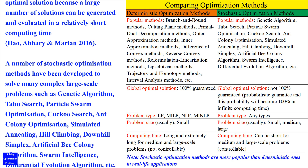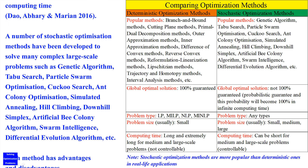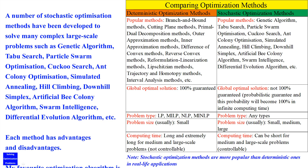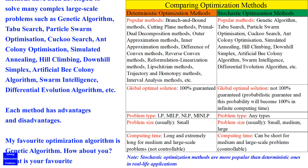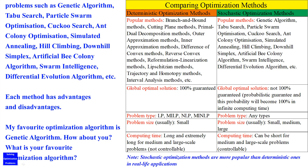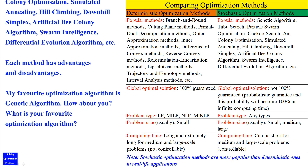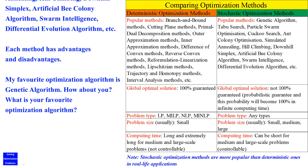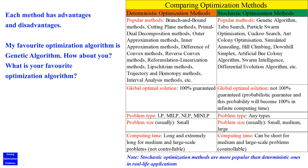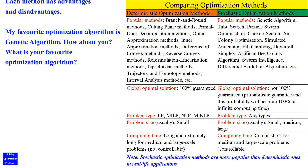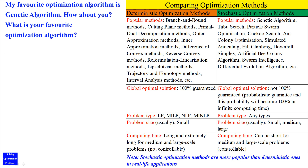A number of stochastic optimization methods have been developed to solve many complex large-scale problems, such as genetic algorithm, taboo search, particle swarm optimization, cuckoo search, ant colony optimization, simulated annealing, hill climbing, downhill simplex, artificial bee colony algorithm, swarm intelligence, differential evolution algorithm, etc. Each method has advantages and disadvantages. My favorite optimization algorithm is genetic algorithm. How about you? What is your favorite optimization algorithm?